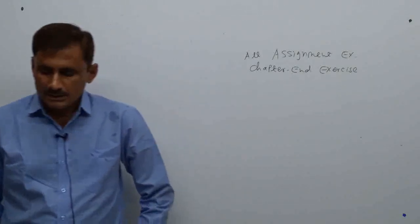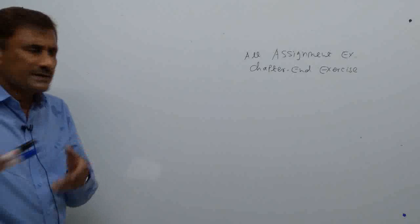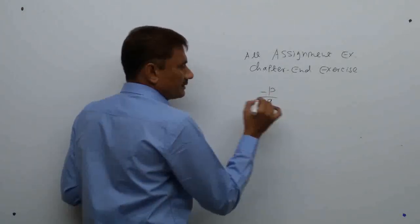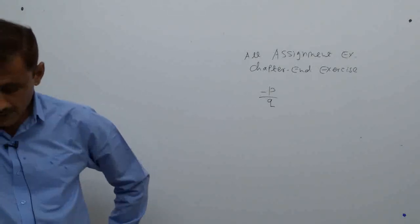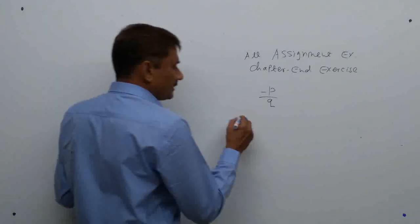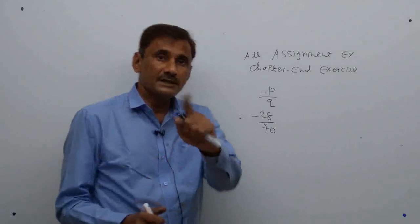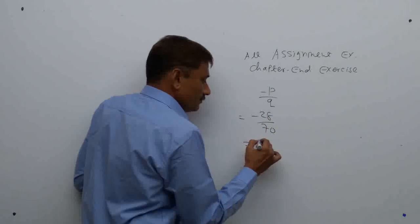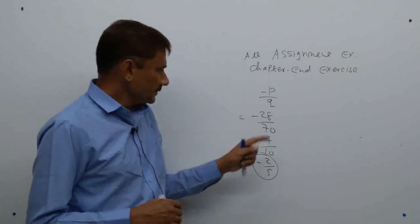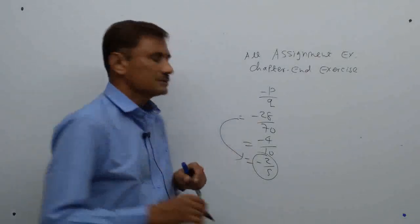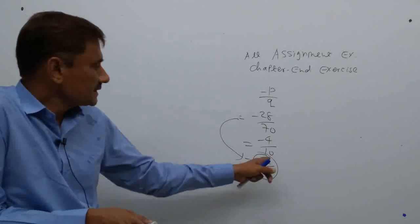We are at page 23, exercise 1.1 MCQs. Question 1: find the standard form of a fraction. Standard form means the numerator carries the sign and the fraction is in simplest form. The answer works out to −28/70. Simplify by dividing by 14: −2/5. So option B is the answer.